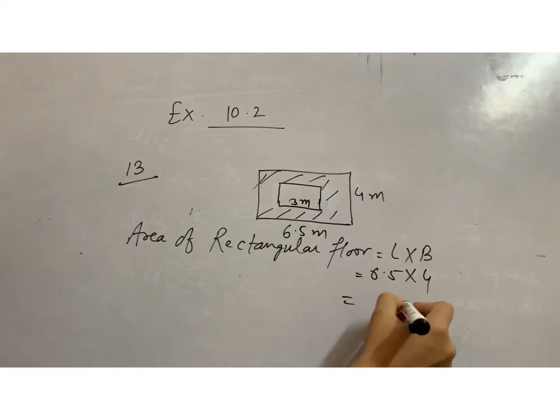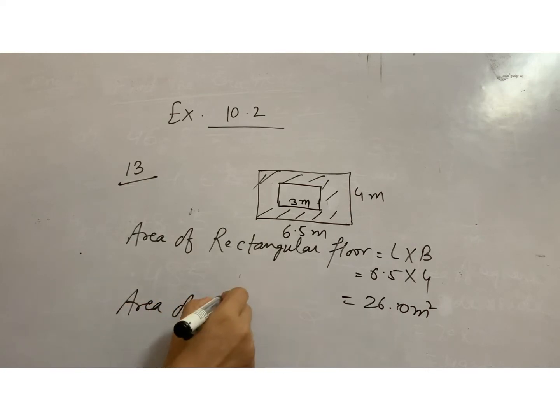And area of carpet which is in square form, side into side, 4 into 4, 16 meter square. So 4 fives are 20, 4 sixes are 24, 24 and 2, 26.